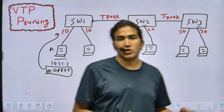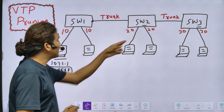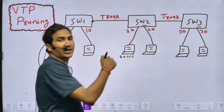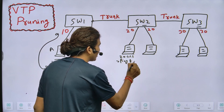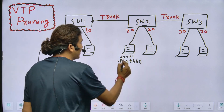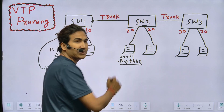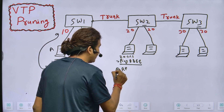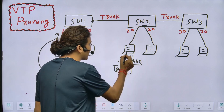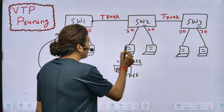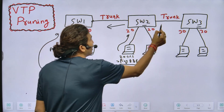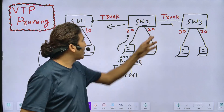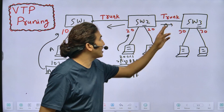VTP pruning helps you stop this unwanted traffic. Similarly, if a machine in VLAN 20 tries to ping 8.8.8.8, it will generate an ARP request message - a broadcast - to find the default gateway's MAC address. That broadcast goes to switch number two, which starts flooding it. But if there is no user in VLAN 20 on those other switches, that VLAN 20 broadcast is unwanted traffic for that trunk link.